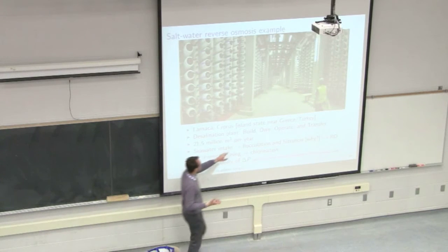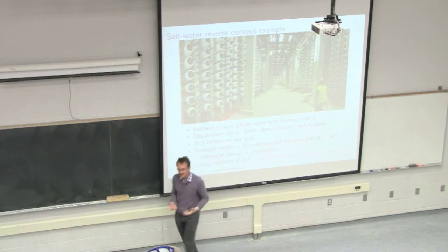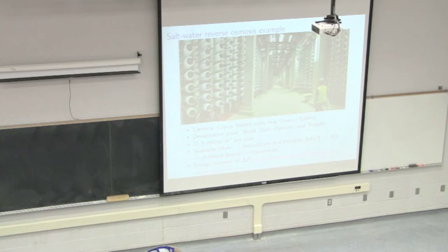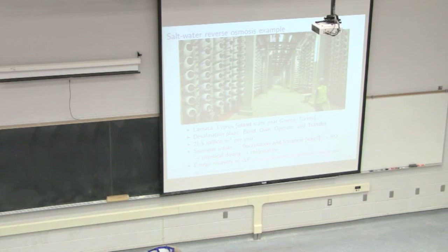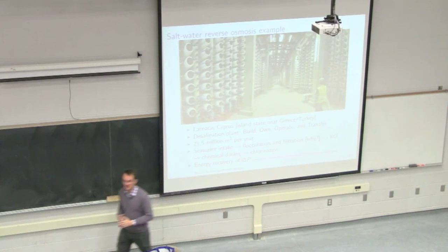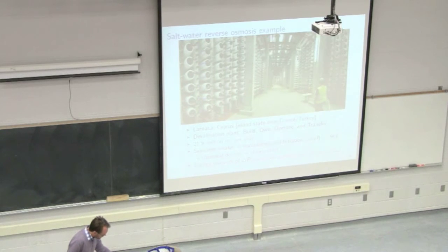What typically happens is that a large company — like GE — that does this for a living will build the units, own them for an initial period, and charge rent or an amount per meter cubed treated to the municipality. They will operate it, and once it's up and running and commissioned, they will transfer ownership to the municipality or government. This minimizes risk on the government side of receiving a plant they don't know how to operate. This is standard procedure in the wastewater treatment business.